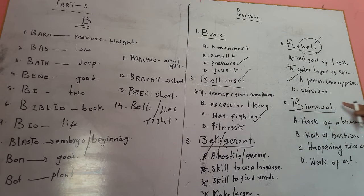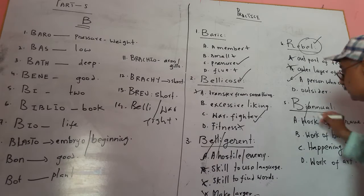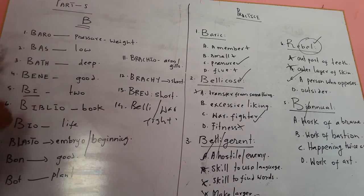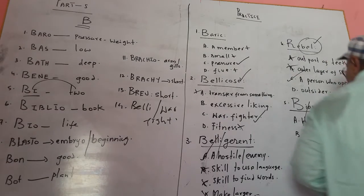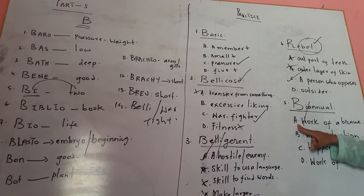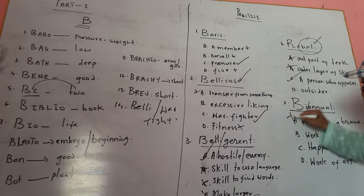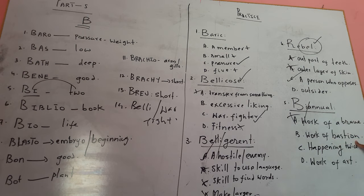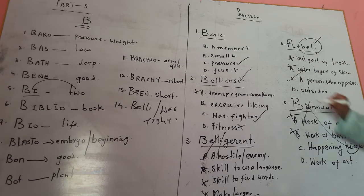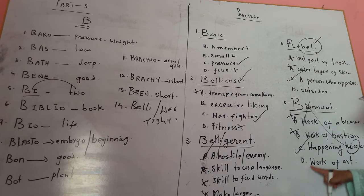Another example uses the prefix 'bi.' The word 'bi' means two. Let's check whether any option carries the sense of two. Option A — work of a prayer — this could not be. Option B — work of bastion — it could not be. Option C — happening twice a year — yes! Twice carries the sense of 'bi.' So option C is correct. Option D — work of a prayer — no, it cannot be.